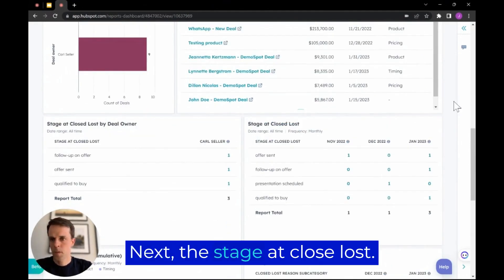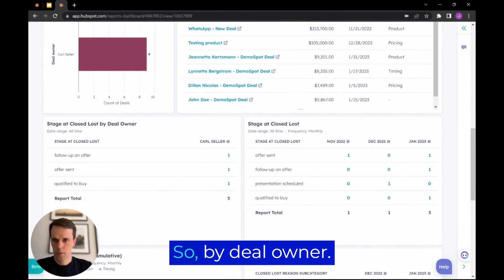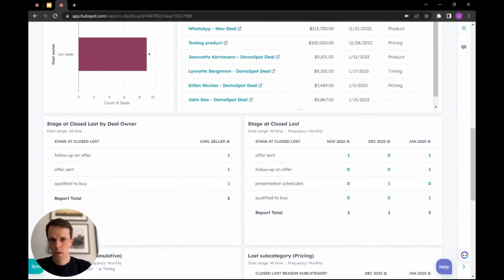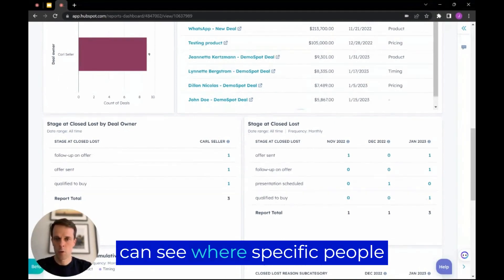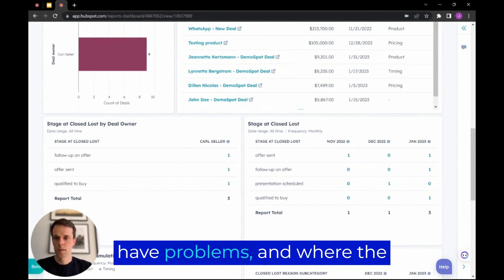Next, the stage at closed lost. So by deal owner and distributed over time. So firstly, by deal owner so we can see where specific people have problems and where the deals are dropping.